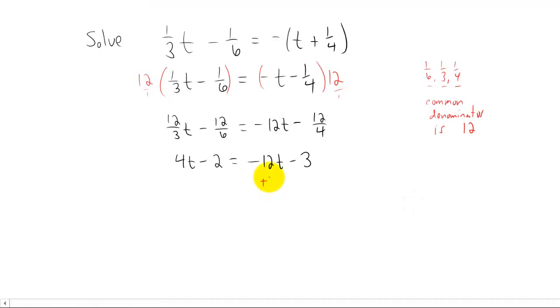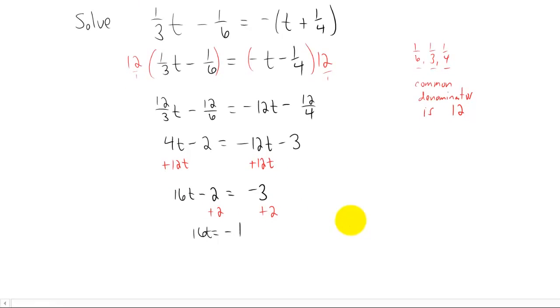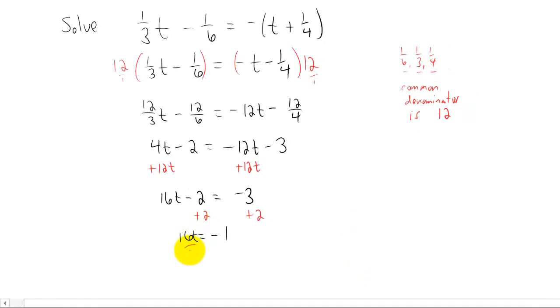Let's do it. I'm going to add 12t to both sides of this equation, and I'm going to add 2 to both sides of this equation. Again, we have to divide to isolate the variable t.